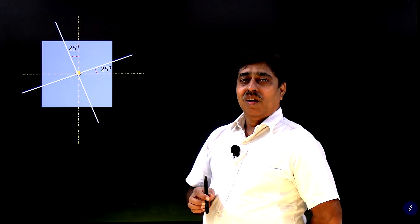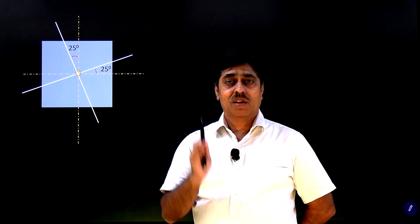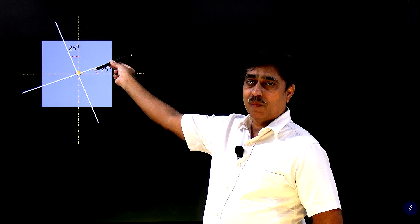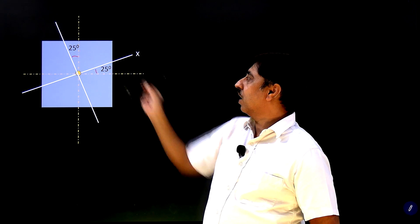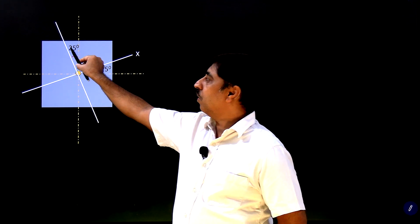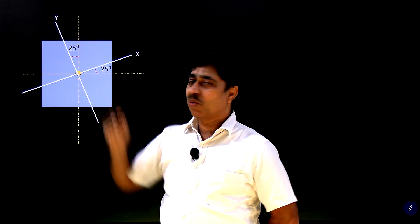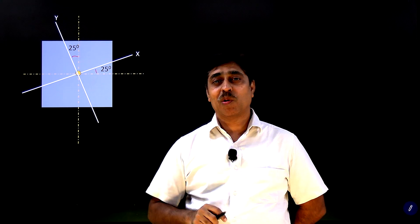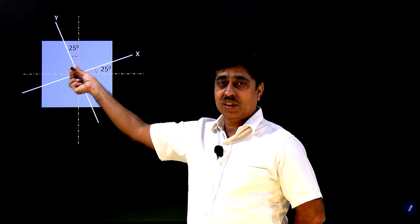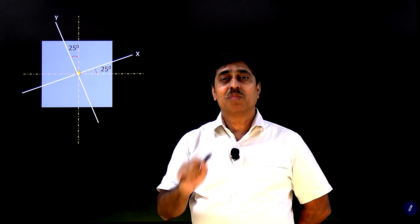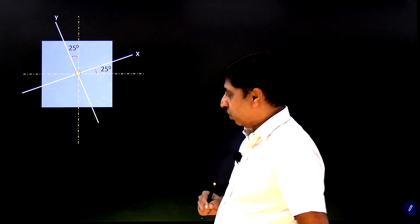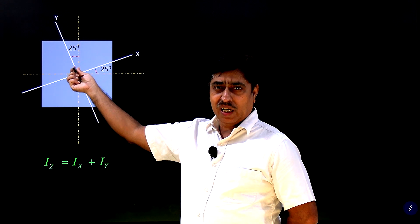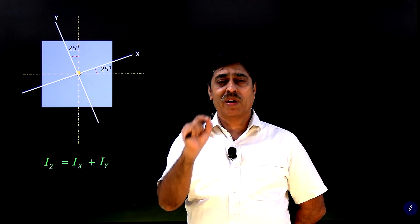If you know the perpendicular axis theorem, this problem is trivial. Let's say this is the x-axis and the moment of inertia about it is Ix. Perpendicular to this is our y-axis, with moment of inertia Iy. But Ix and Iy are equal. The moment of inertia about the z-axis equals Ix plus Iy — this is the perpendicular axis theorem. Almost all of you must know the moment of inertia of this square plate about the z-axis, which passes through its center perpendicular to the plane.